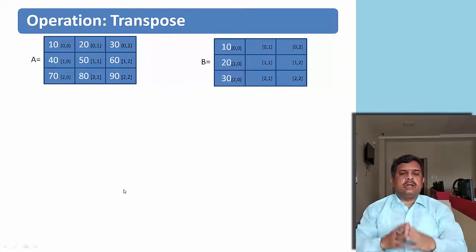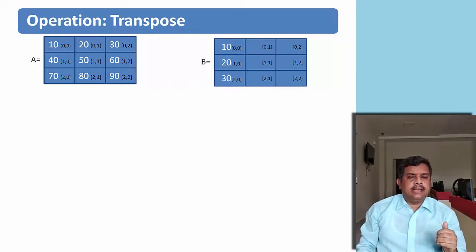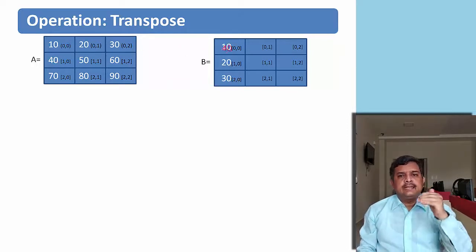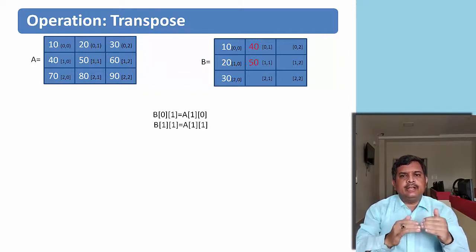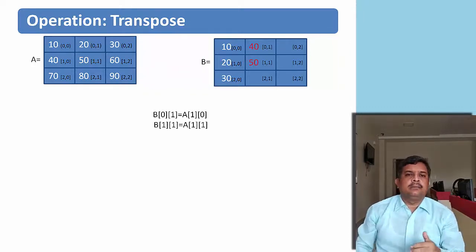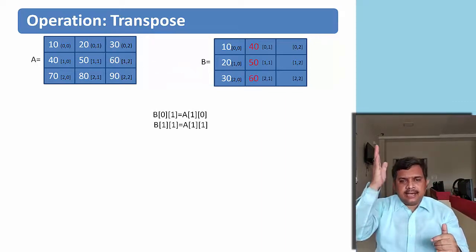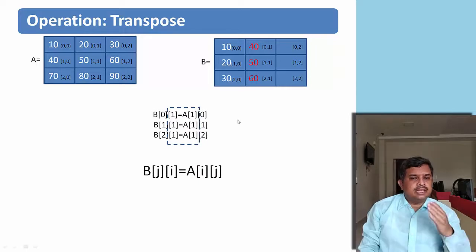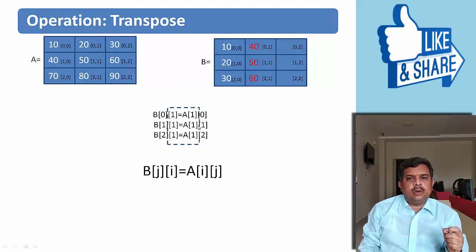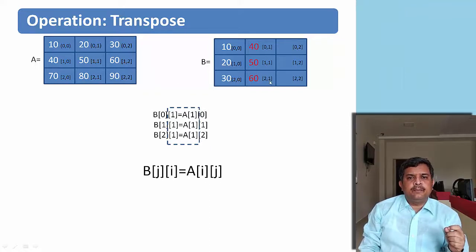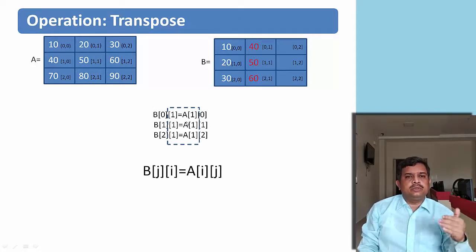So if you want to see the relation, the second subscript of b is equal to the first subscript of a. It means a[i][j] becomes b[j][i]. As we know, the first subscript indicates the row and the second subscript indicates the column. Let us see one more row. The second row in matrix A: the first element is 40 and it is moved to the first element of the second column in B. The same relation holds: a[1][0] is 40, moved to b[0][1]; a[1][1] moved to b[1][1]; a[1][2] moved to b[2][1].